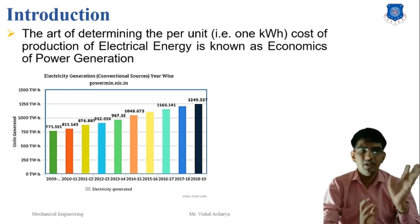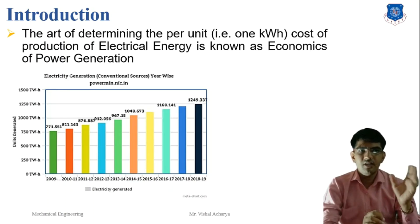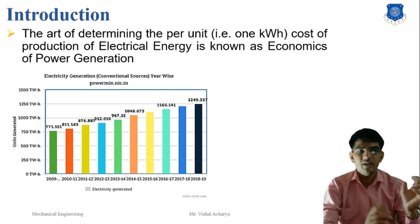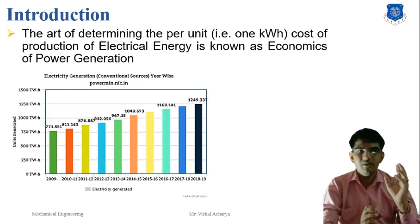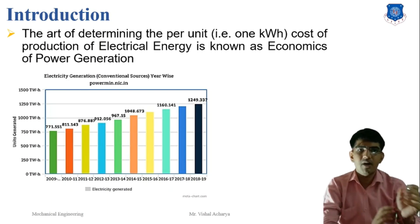The problem of determining the cost of production of electrical energy is highly complex. This poses challenges to the power engineer. There are several factors which influence the production costs, such as the cost of land and equipment, depreciation of equipment, interest on capital investment, etc. Therefore, a careful study has to be made to calculate the cost of production. In this chapter, we will focus our attention on the biggest aspects of economics of power generation.